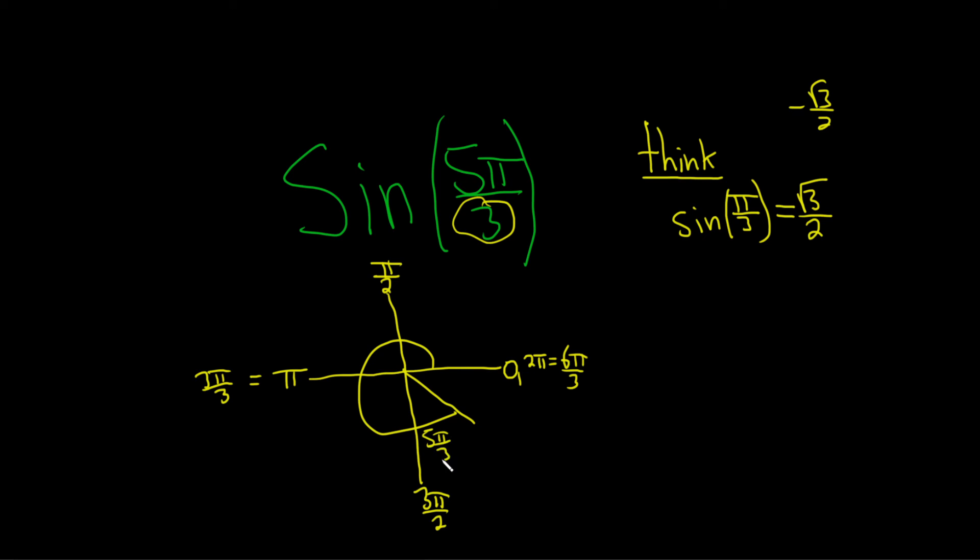So that tells us that the angle's terminal side is here. Why is that important? Because on the unit circle, sine is the y-coordinate. And the y-coordinate here is negative. That means sin(5π/3) = -√3/2.